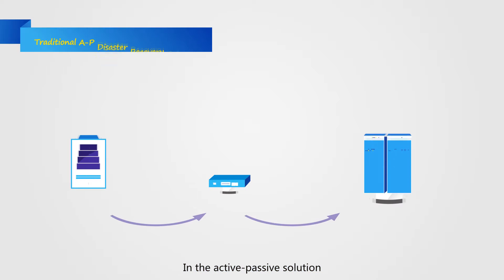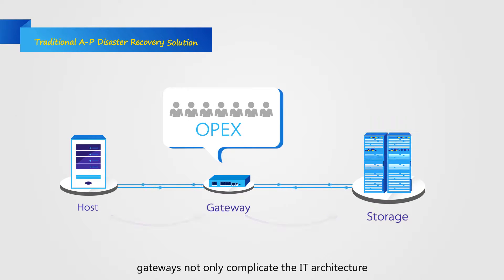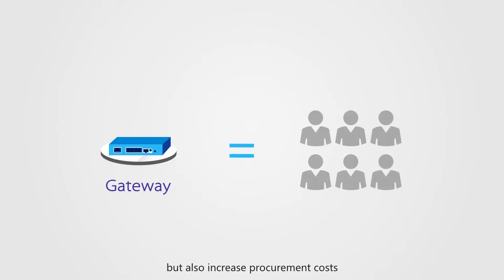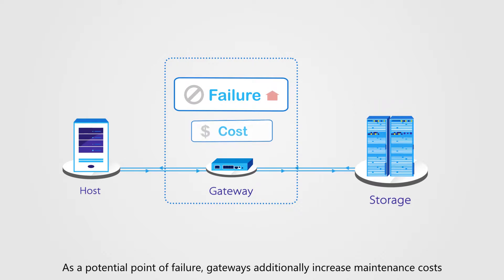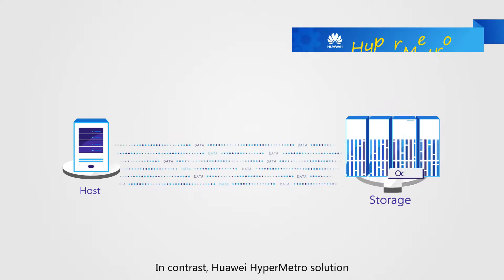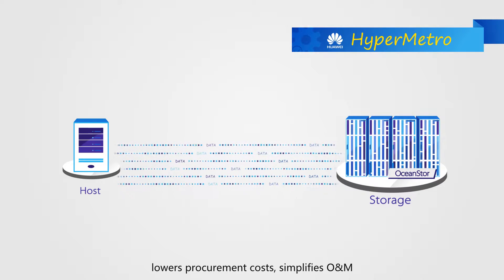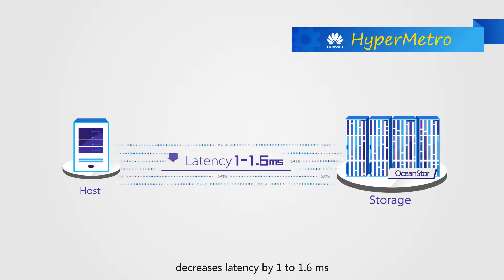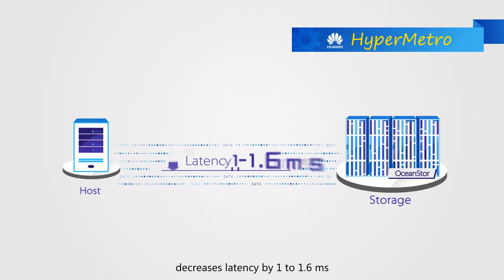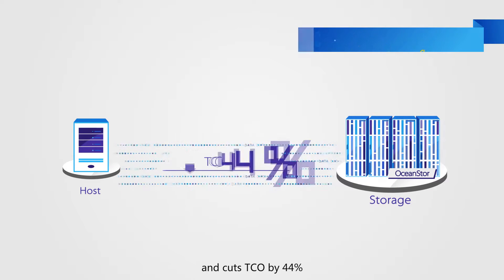In the active-passive solution, gateways not only complicate the IT architecture, but also increase procurement costs. As a potential point of failure, gateways additionally increase maintenance costs. In contrast, Huawei HyperMetro solution lowers procurement costs, simplifies operations and maintenance, decreases latency by 1 to 1.6 milliseconds, and cuts TCO by 44%.